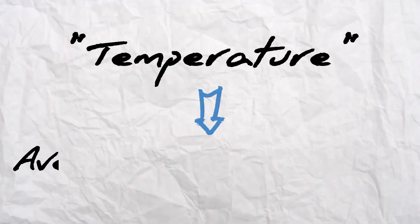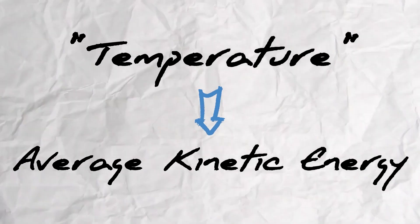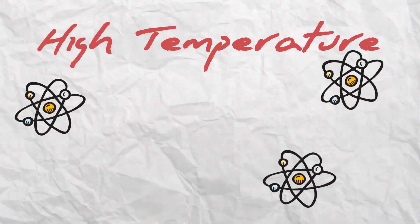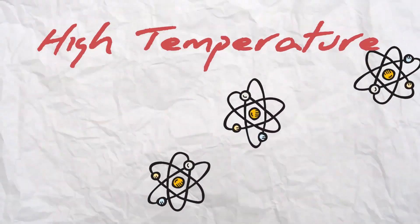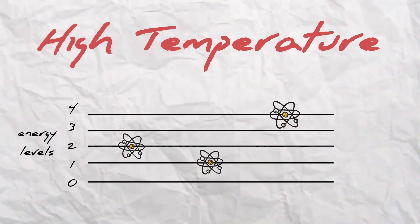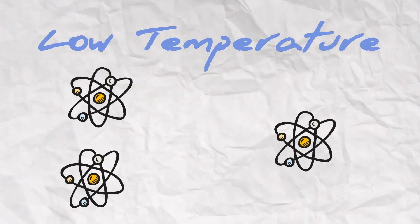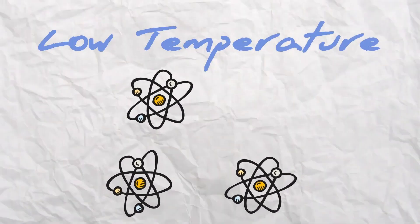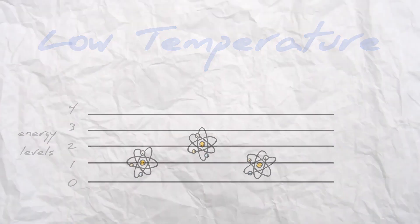Temperature is just a word describing the average kinetic energy of a group of particles in a system. So while particles that are super hot have lots of kinetic energy, move quickly, and on a quantum level occupy lots of different energy levels, super cold quantum particles barely move and occupy a lesser range of energy levels.